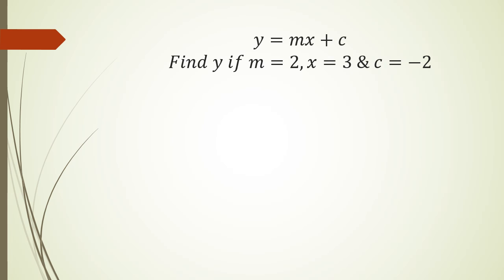If we have something like this here, we've got an equation that says y equals mx plus c. And the question is, find y if m equals 2, x equals 3, and c equals negative 2. So all we're doing is we write the equation as it is, y equals mx plus c. And then we write y equals m.